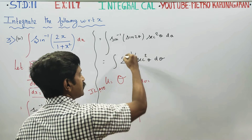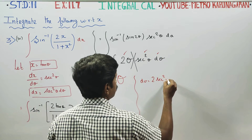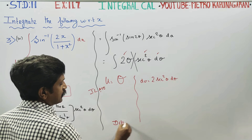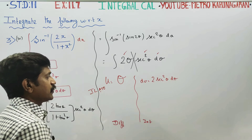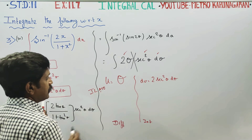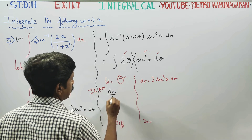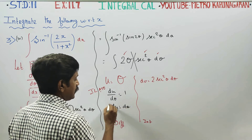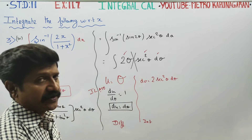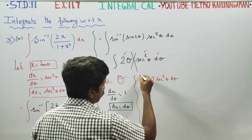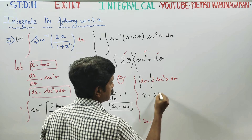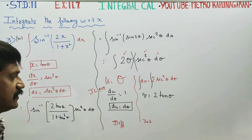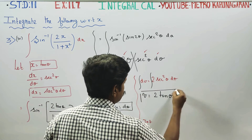For the integration by parts: differentiate u, so du by d theta equals 1, meaning du equals d theta. For v, integrate dv: integrate 2 secant square theta d theta. Since the integral of secant square theta is tan theta, v is equal to 2 tan theta.